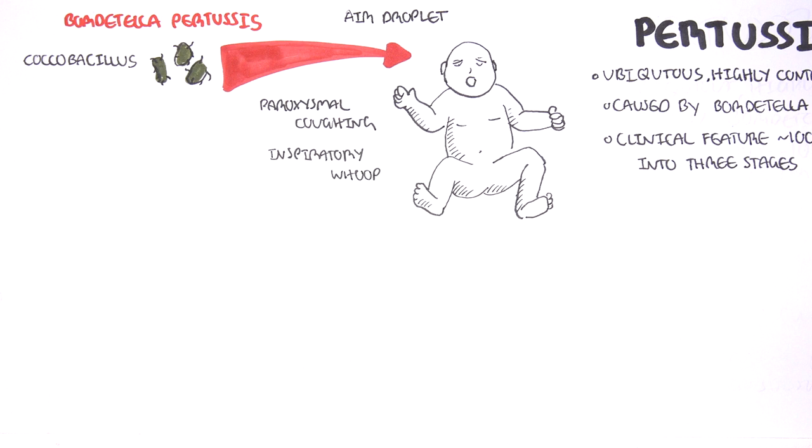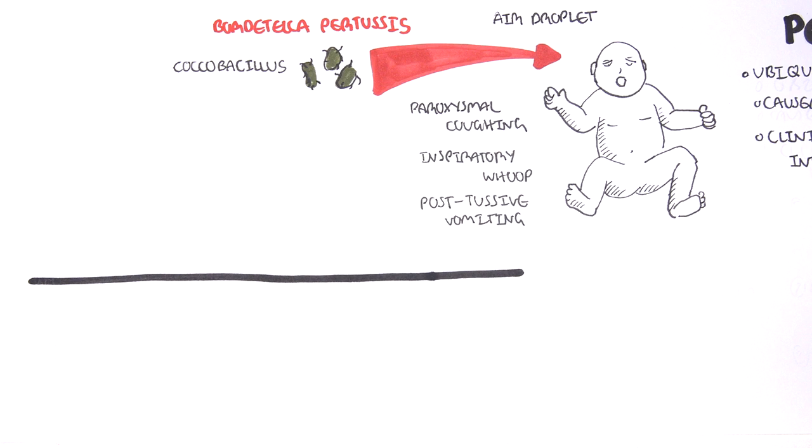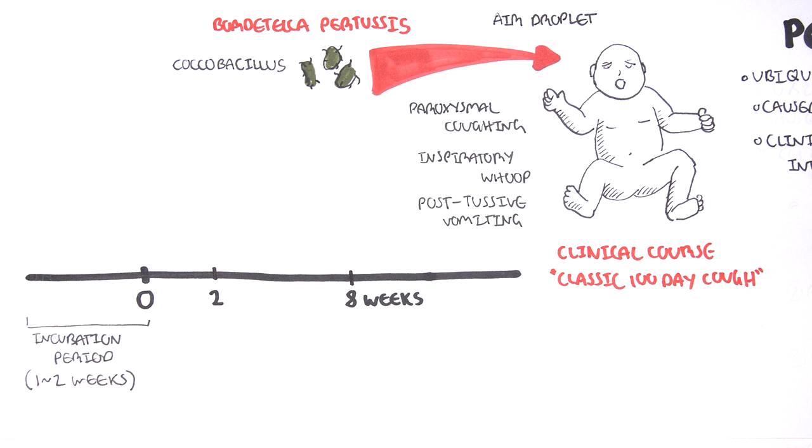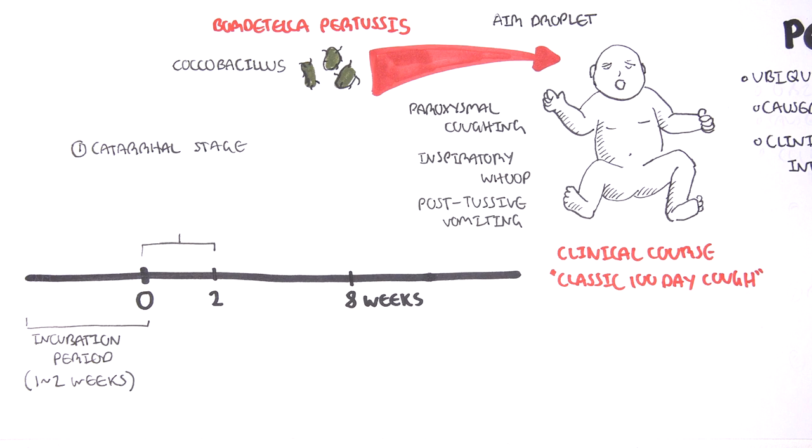The 100-day cough can be divided into three stages. There's an incubation period of about one to two weeks before symptoms start. The first stage is the catarrhal stage where the person becomes highly contagious. Symptoms are similar to upper respiratory tract infections, and this goes for about two weeks.